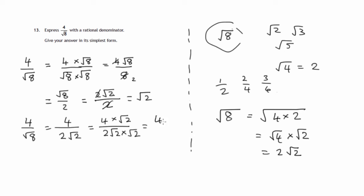So we have 4 root 2 over... Now, there's a 2 times root 2 times root 2 is 2. Root 2 times root 2 gives you that 2 there. So we get 4 root 2 over 4.